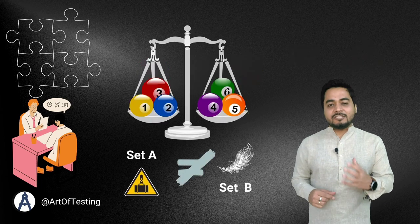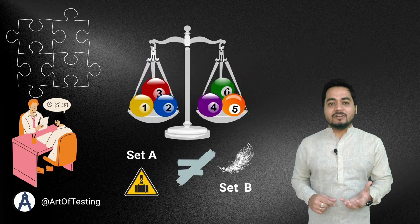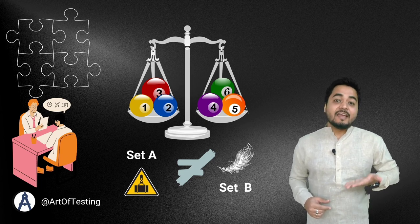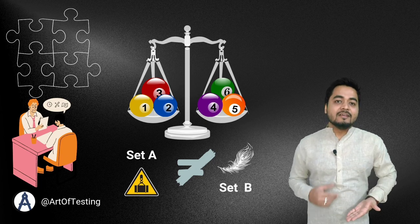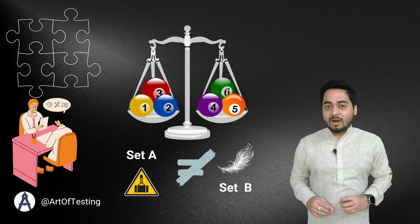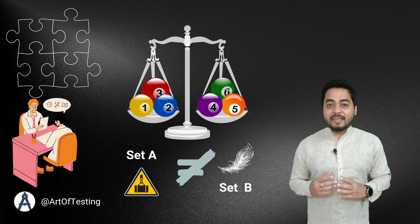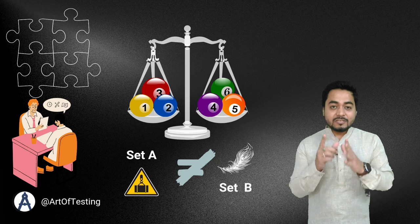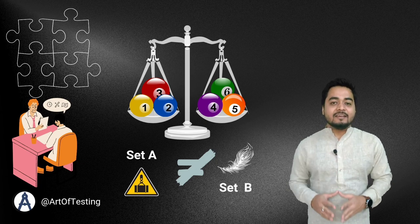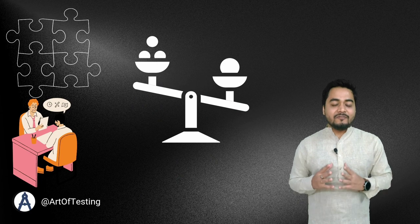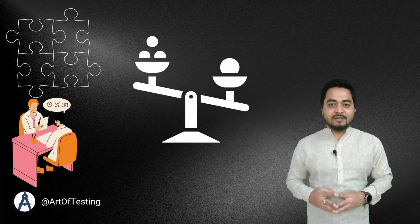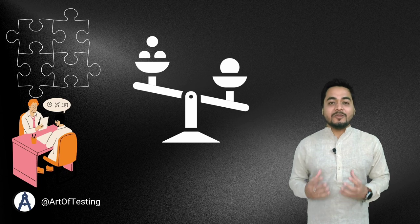However, if the question is to find the heavier ball and set A's side is heavier, this means that set A has that odd ball of higher weight. Using one iteration, you have identified the set of 3 balls which contains that odd ball.